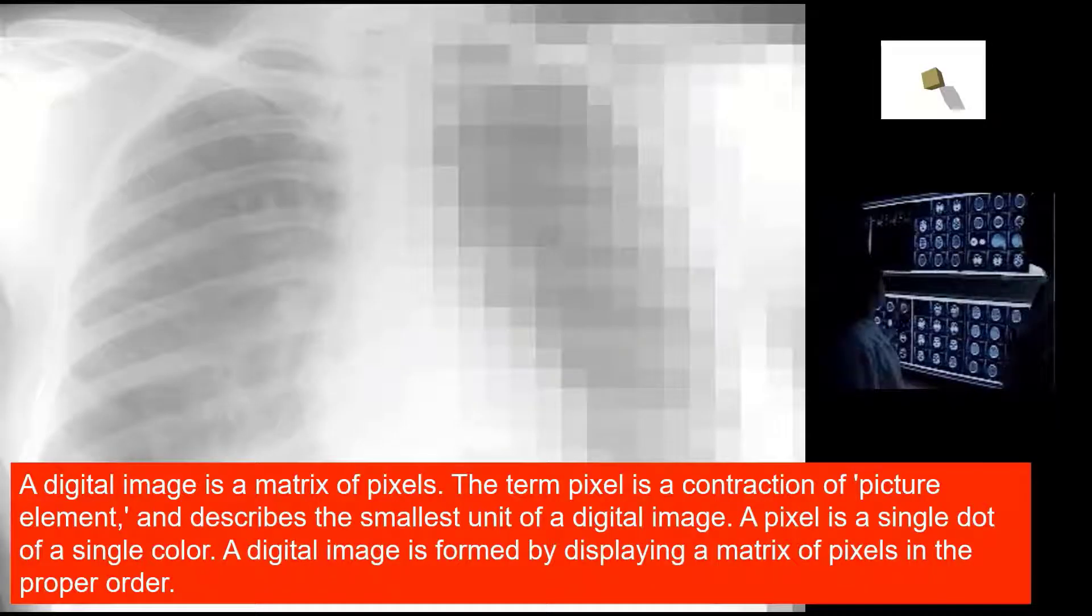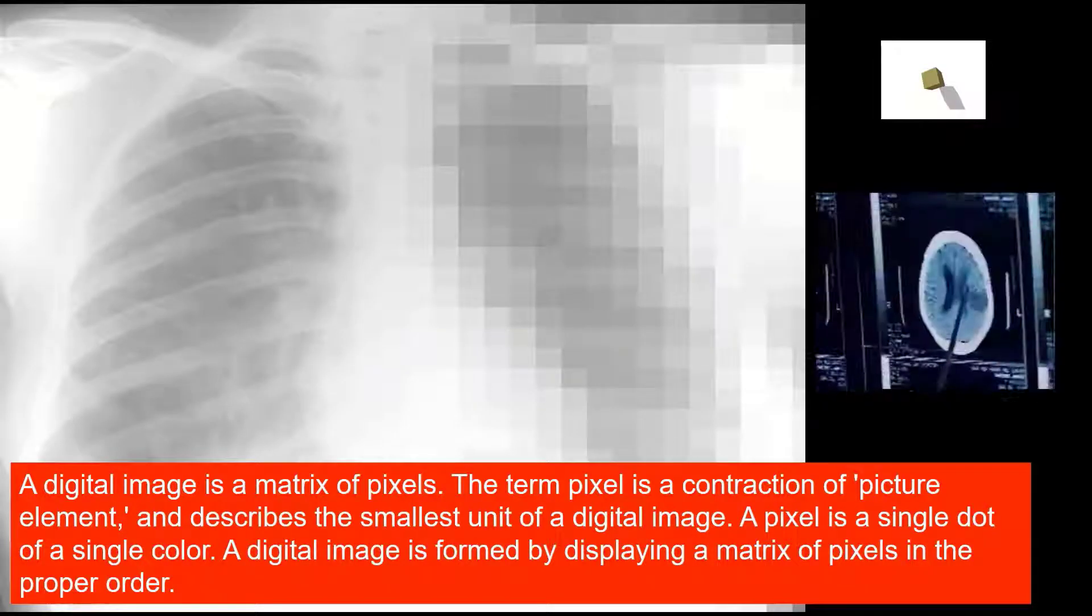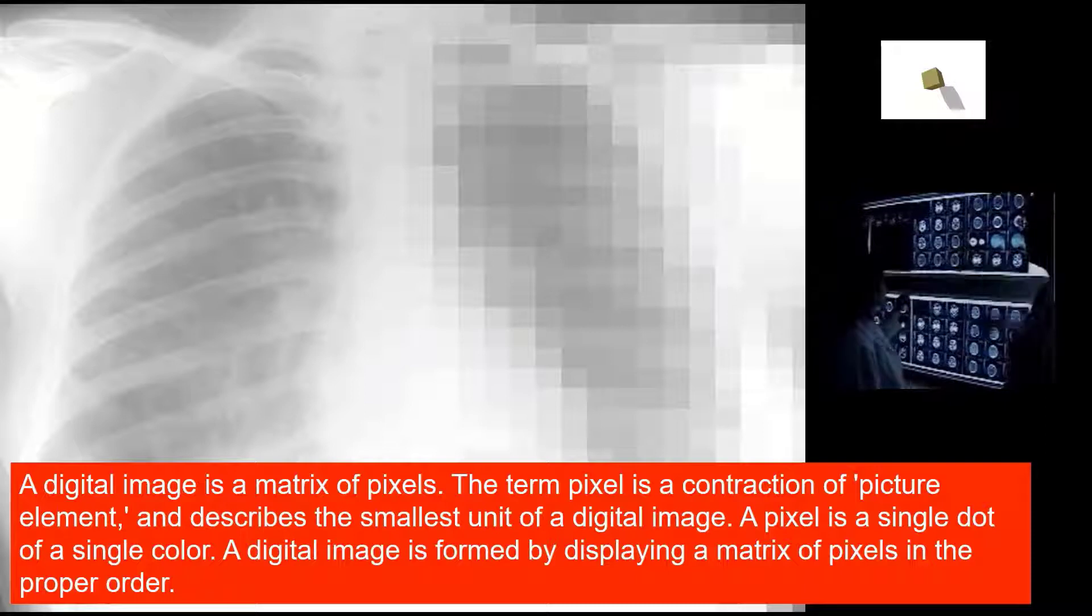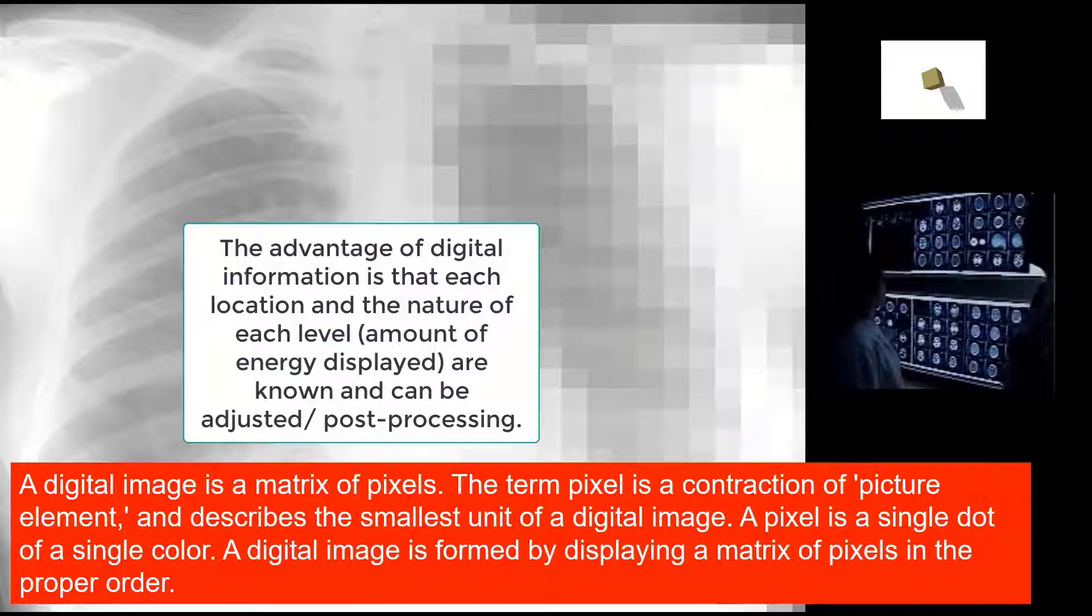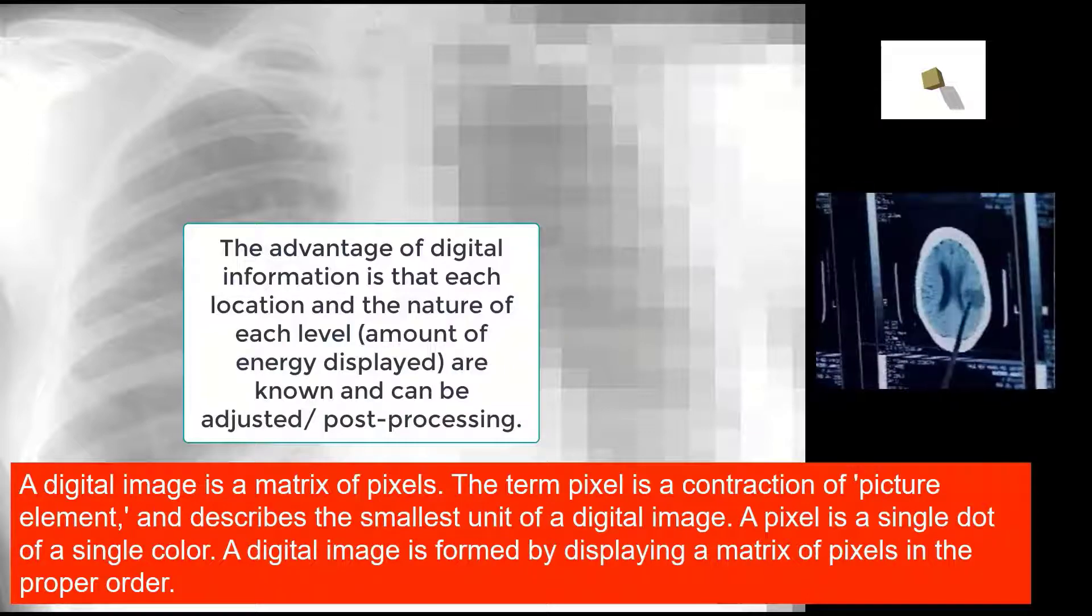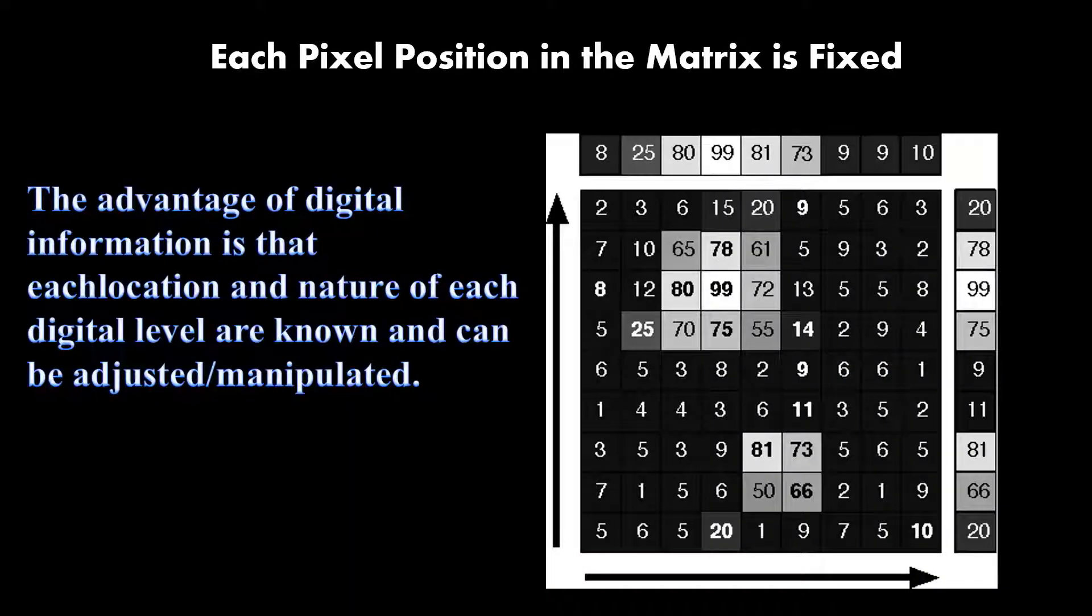A digital image is a matrix of pixels. The term pixel is a contraction of picture element and describes the smallest unit of a digital image. The advantage of digital imaging is that each level and nature of each level can be changed.